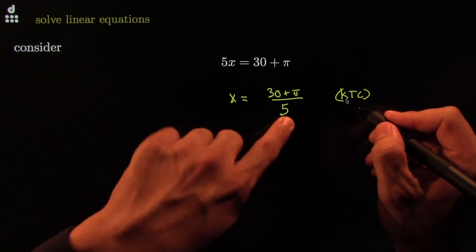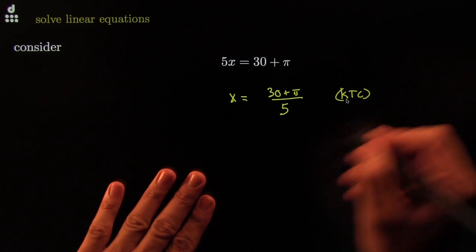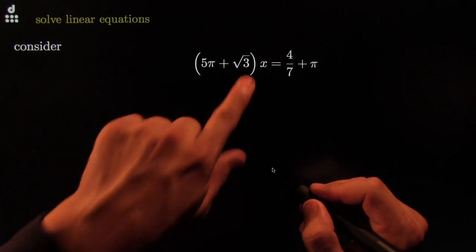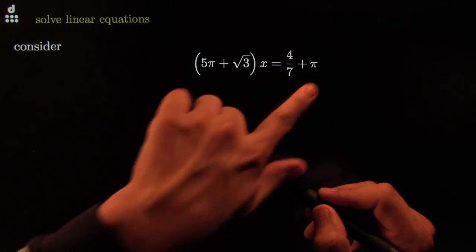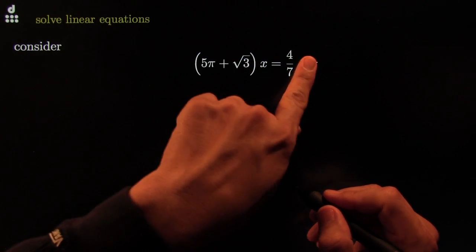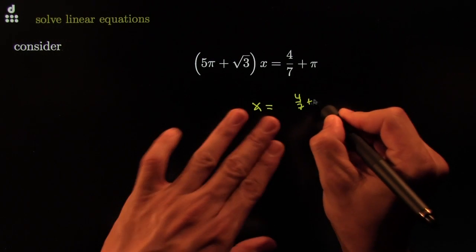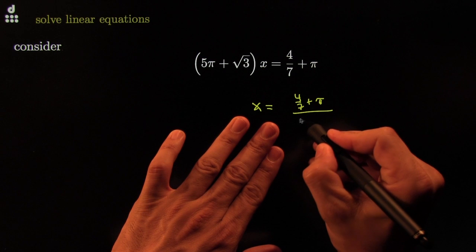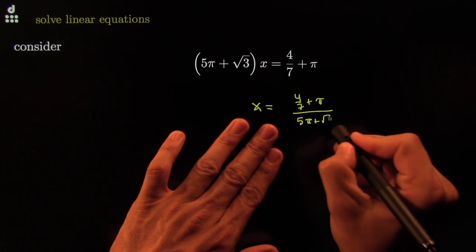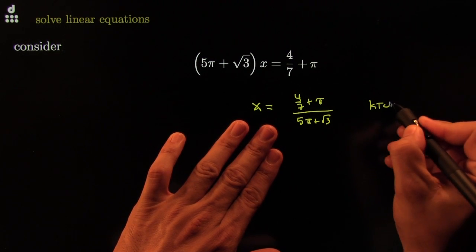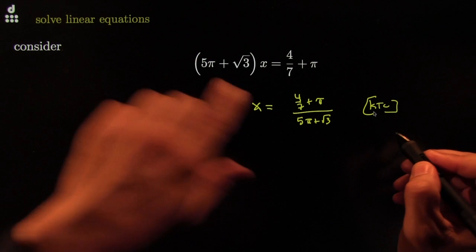Blah over the coefficient. Bring the coefficient down. Easy right? No x's here. I just have 1 coefficient. No x's here. 1 blah on the right hand side. Perfect setup. All I do is 4 over 7 plus pi all over 5 pi plus the square root of 3. Kill the coefficient. Bring it down. Done.